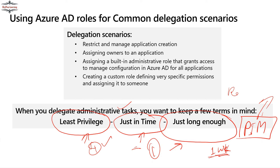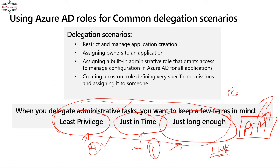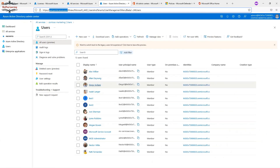If a user requires access for one week, give it for one week only. If they need one day, give one day. If they need four hours, don't give a full day. The PIM (Privileged Identity Management) concept automates this — managing just-in-time access, duration, least privilege, and approval workflows. We will cover PIM in detail in upcoming videos.